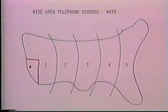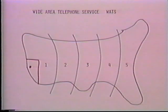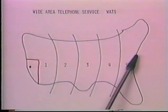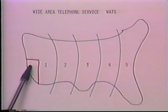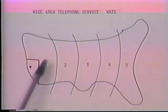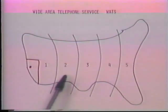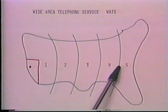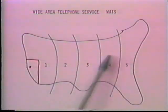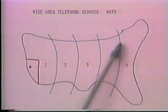For interstate WATS outward calling, you select bands or areas you're going to call into. AT&T's outbound WATS divides the United States into five bands. Band one, closest to your office, allows calls outside California up to the edge of band one. If you buy WATS to band four or five, you get everything up to and including that band — the bands move outward, and you buy to the furthest band you want.